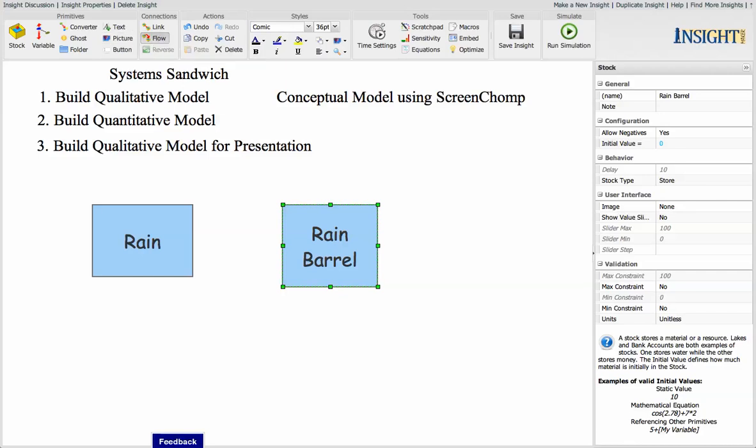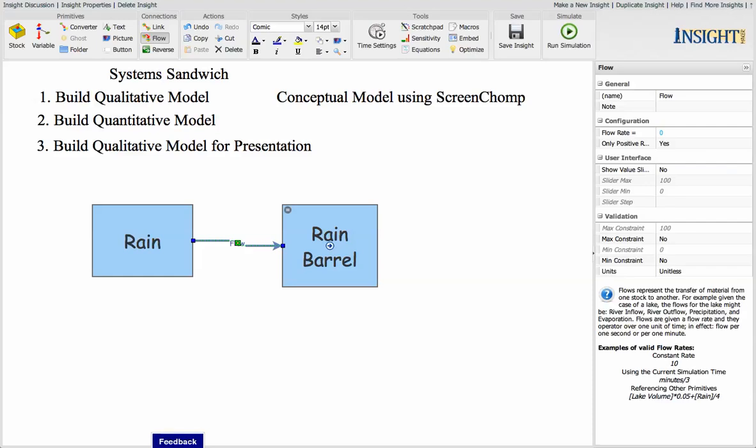So now we're going to put in a flow. We're going to connect a flow from the rain to the Rain Barrel. We're going to reach in here and pull this name out here a little bit, pull it up here. And we're going to call it Inflow. Make that bigger. And we're going to connect a flow coming out of the bottom of the Rain Barrel as if it were a drain. We're going to call this Drain.